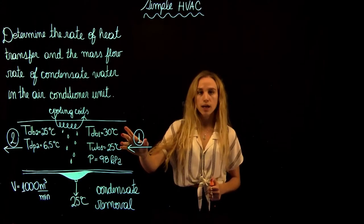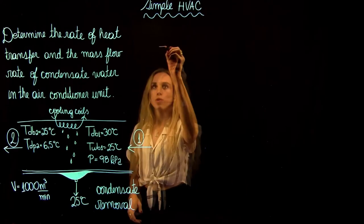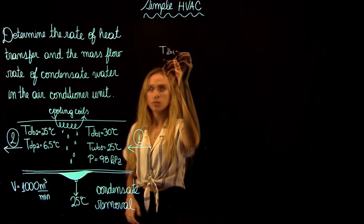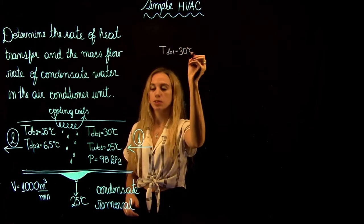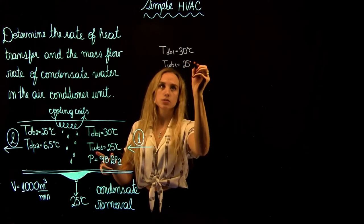We have two values at state 1 and we can go to the psychometric chart. So we have the temperature of the dry bulb at 1, which is 30 degrees Celsius, and the wet bulb at 1 which is 25 degrees Celsius.